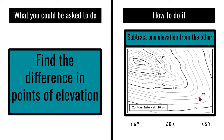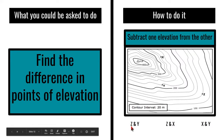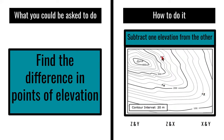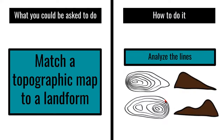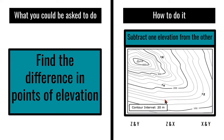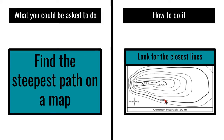X equals 260, Y equals 220, and Z equals 140. Then find the differences: subtract Z from Y, subtract Z from X, and subtract Y from X to find each elevation difference. If you know these things — how to identify side and top views that match, how to find contour intervals, and what steep versus gradual looks like — that's everything you need to know for topo maps.